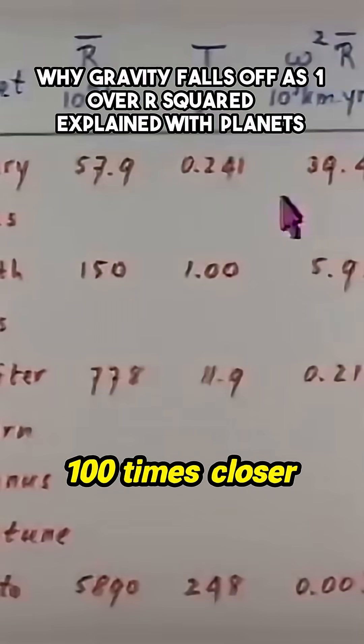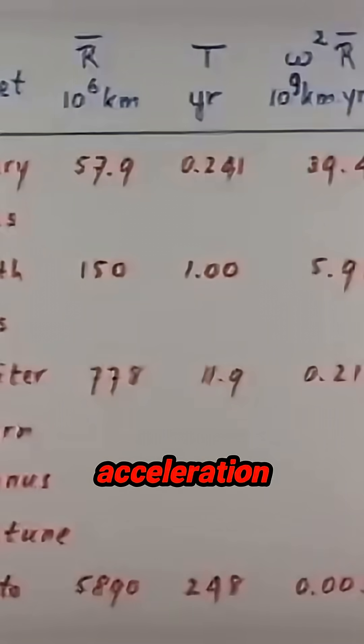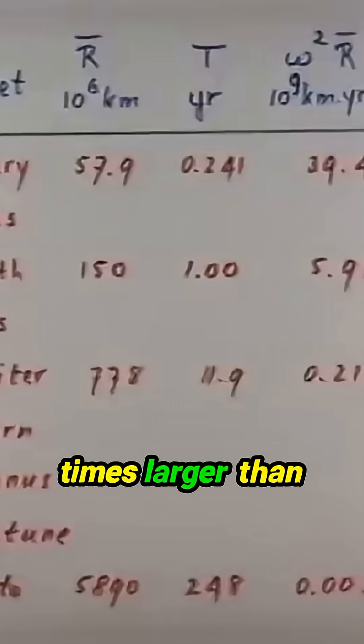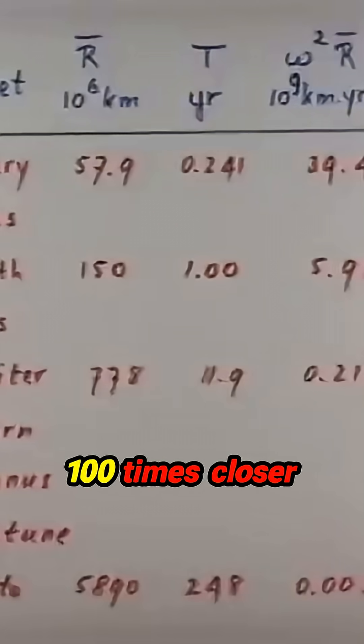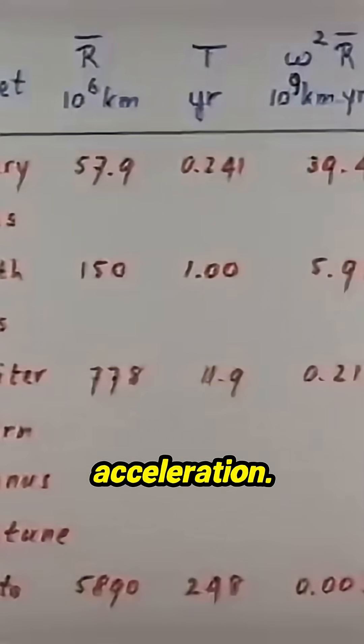Notice that Mercury, which is 100 times closer than Pluto, has a centripetal acceleration which is 10,000 times larger than Pluto. Being 100 times closer results in a 10,000 times larger centripetal acceleration.